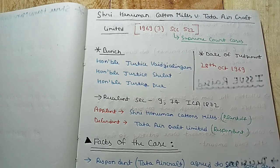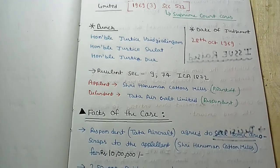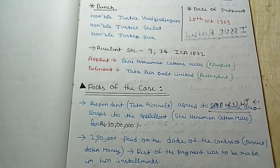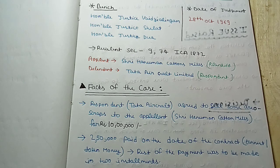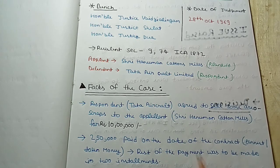The appellant party is Sri Hanuman Cotton Mills and the defendant party is Tata Aircraft Limited. What happened here is that the respondent, Tata Aircraft, made a deal with Sri Hanuman Cotton Mills to sell some scrap for 10 lakh rupees. A sum of 2.5 lakh rupees was paid on the date of the contract as token money or earnest money.